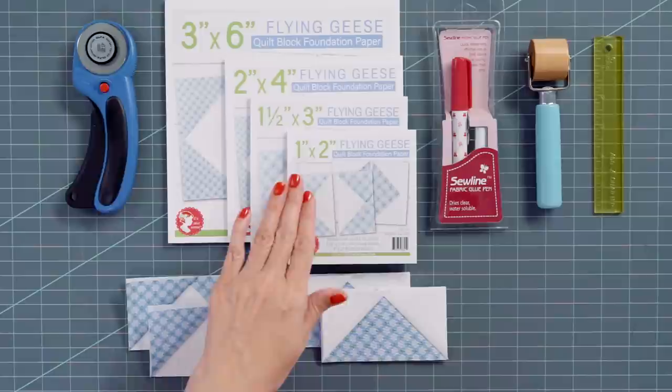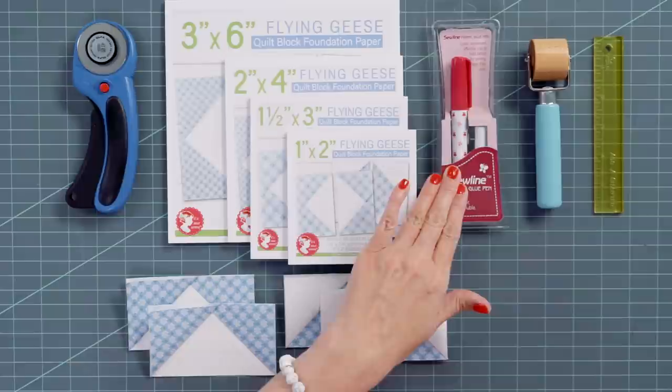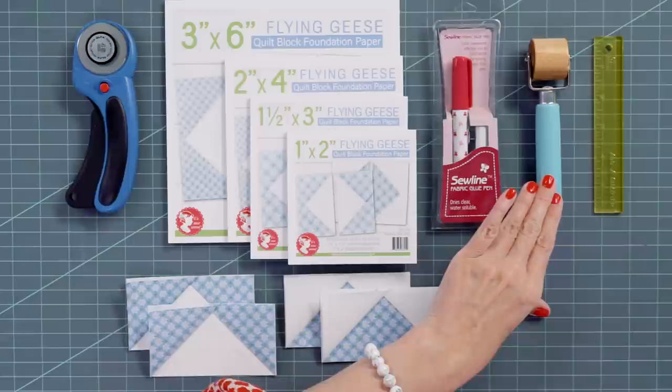What you need is just a foundation pad, a rotary cutter, I like to use a glue stick, an add a quarter ruler, and the quick press seam roller so that you don't have to iron. So let me show you how to use it.